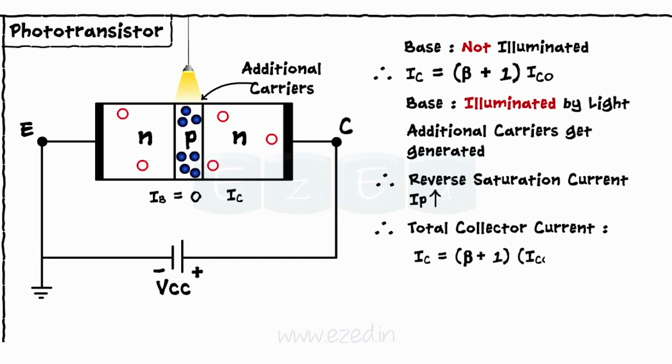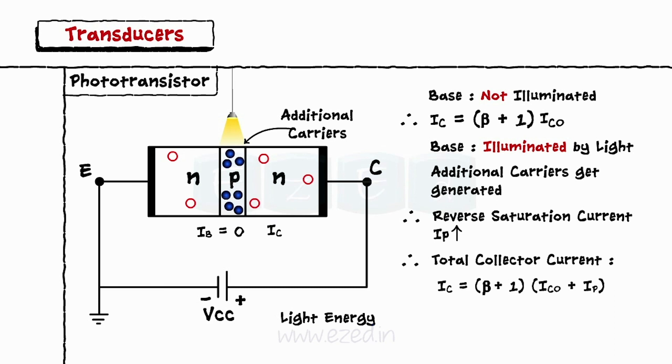Thus, in a phototransistor, light energy gets converted into current.